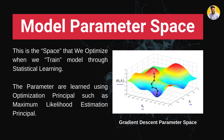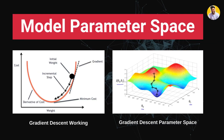The first technique is model parameter space. This is the space where we optimize when we train a model through statistical learning. The parameters are learned using optimization principles such as maximum likelihood estimation or gradient descent. For example, in linear regression, when you update the weights beta 1 and beta 0, you are doing optimization in the model parameter space.